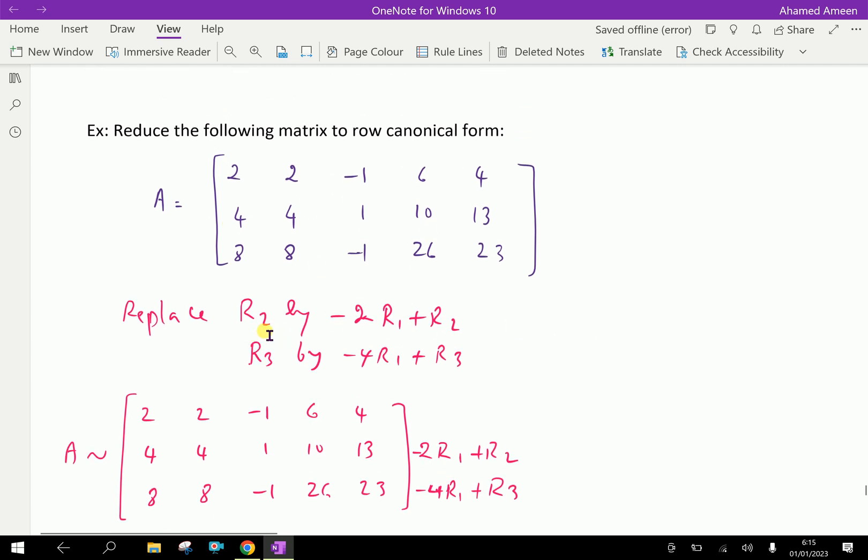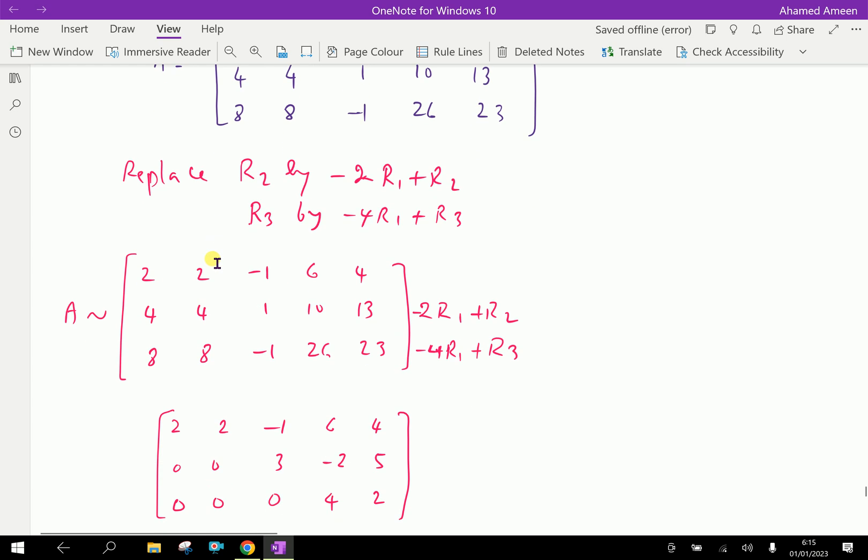Replace R2 by minus 2R1 plus R2. That means, multiply row 1 by 2 and add up with row 2, we get 0. Look at here, 0 in the first row, first element. First, write the given matrix as it is. Operating with the second row as minus 2R1 plus R2 and third row, replace minus 4R1 plus R3.